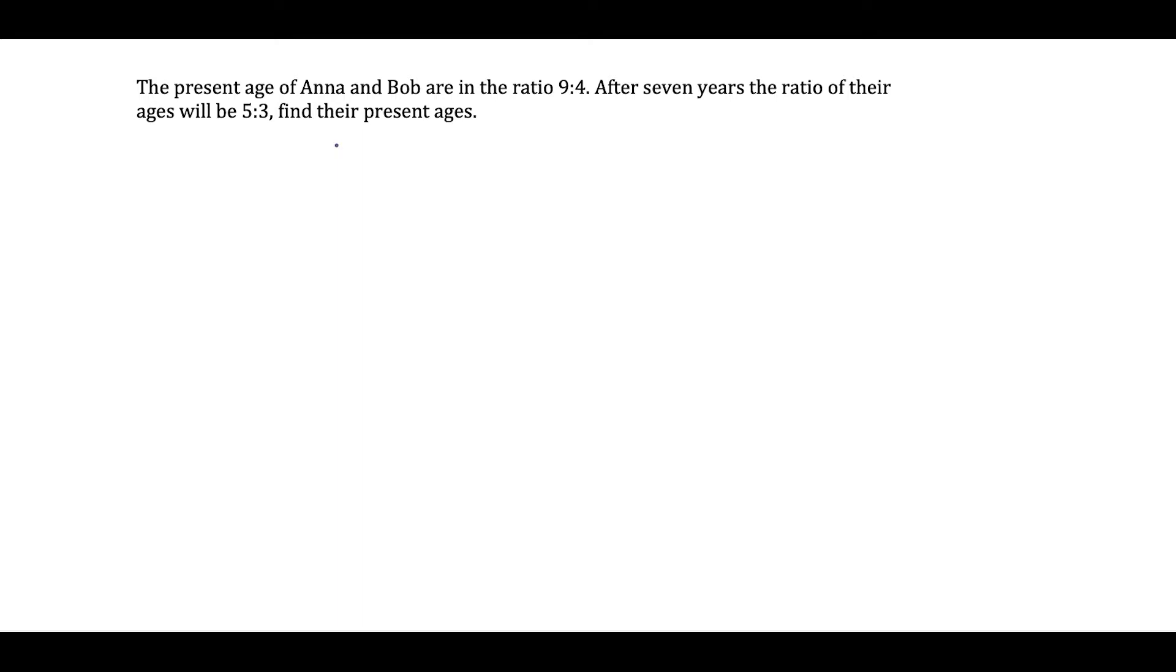What's up, I'm Vin and today I want to take a look at a ratio word problem involving ages. This actually comes from one of my viewers who left a comment. The question has Anna and Bob, and we're told that the ratio of their ages is 9 to 4. Seven years later the ratio changes to 5 to 3 and we want to find their present ages.